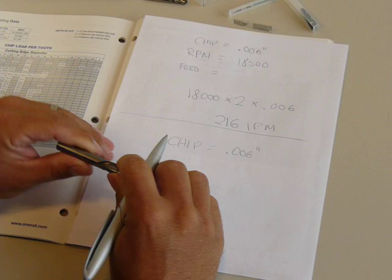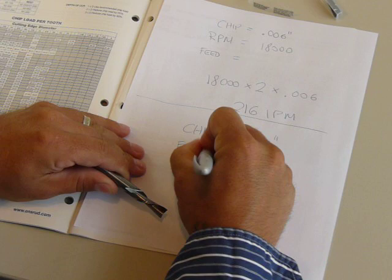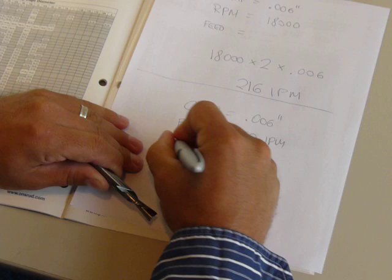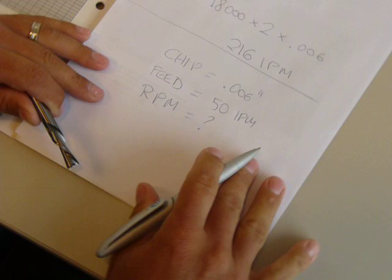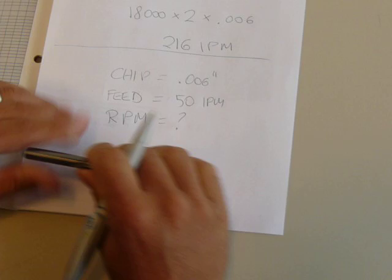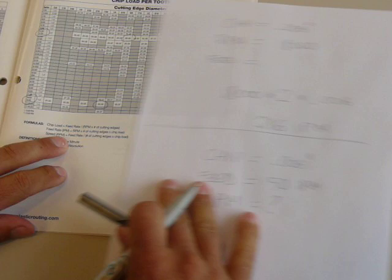And we know that we can achieve a feed rate of about 50 inches per minute. What we don't know is what RPM we need to run at in order to get the correct finish and tool life for this tool. Therefore, what we can do is we can use the RPM formula that's listed in our catalog if we have the other two values to figure out what RPM we need to run at.